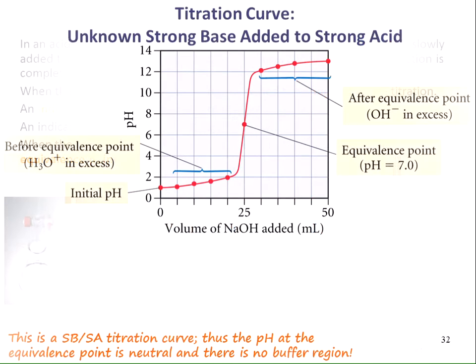Here we're looking at the titration curve where an unknown strong base has been added to a strong acid. Let's take a look at how this graph is laid out. On the x-axis, since we're adding a strong base to the strong acid, we've listed the volume of sodium hydroxide that has been added at each point. And on the y-axis, we have the pH — the measured pH of the system.